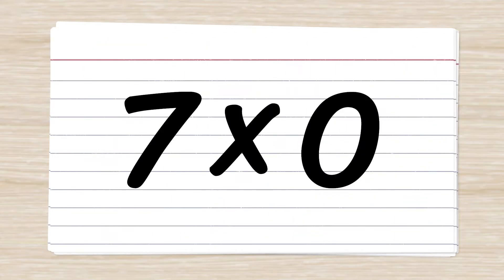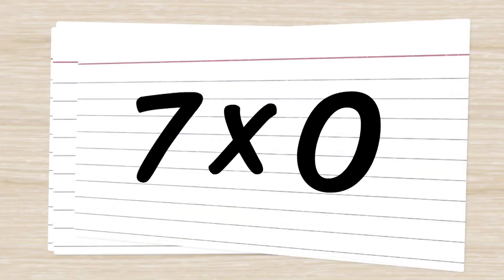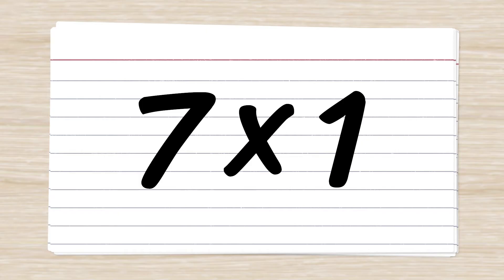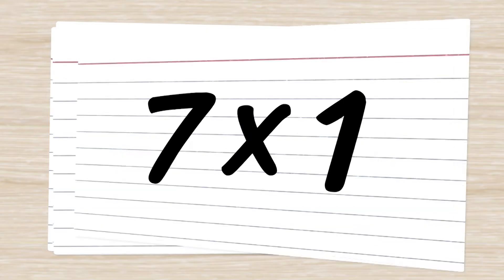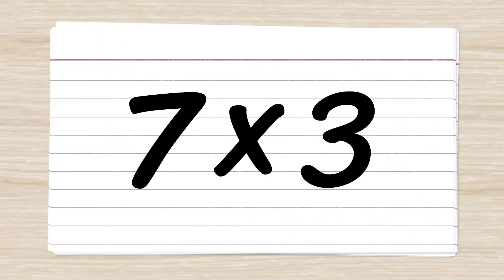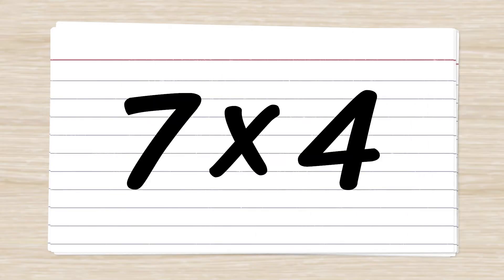Seven times zero. Zero. Seven times one. Seven. Seven times two. Fourteen. Seven times three. Twenty-one. Seven times four. Twenty-eight.